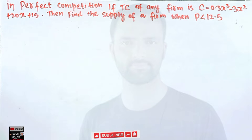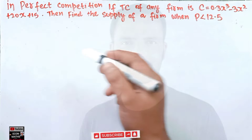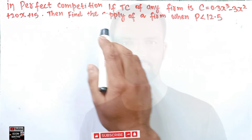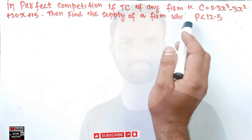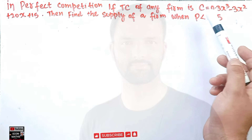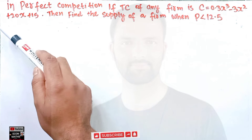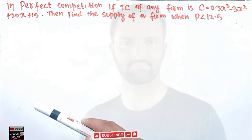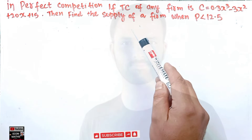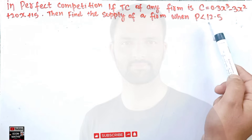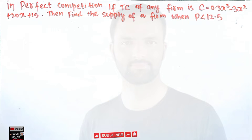Hi, this is Halal. In this video on the mathematical economics series, we will solve a problem asked by a brother, Shaquille, in the YouTube comment box. The question is: in perfect competition, if the total cost function is given as C = 0.3x³ - 3x² + 20x + 15, where x is the quantity, find the supply of a firm when the price is less than 12.5.